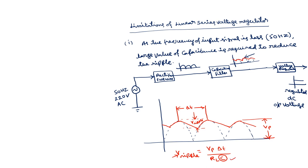A large value of capacitance means the area or size of the regulator will be more. This large value of capacitance implies the size of the regulator is more. This is one limitation of the linear series voltage regulator. The second limitation is less efficiency.